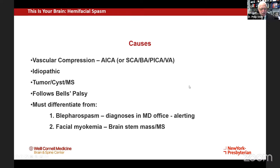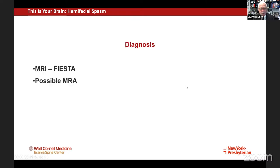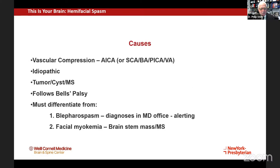As we work this up, we get MRI scans and have to rule out that there's a tumor, a cyst, or that the patient has MS. MS is usually a syndrome, and we can get a diagnosis with other factors as part of that syndrome.